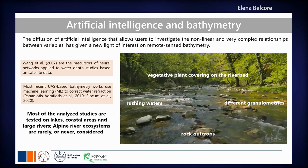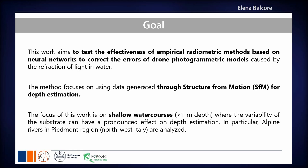We tested the effectiveness of empirical radiometric methods through a deep learning model to correct the underestimation of bottom elevation derived from the structure-from-motion methodology. We decided to focus only on small watercourses with less than one meter depth, mainly located in the alpine region of Piedmont in northwest Italy.